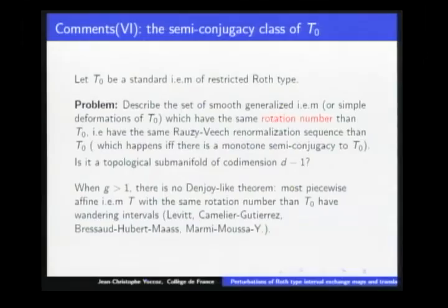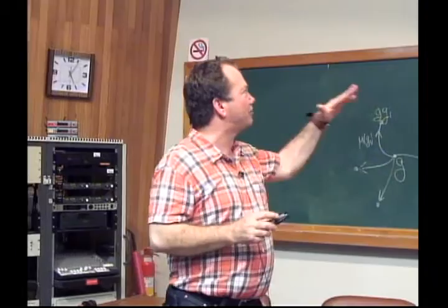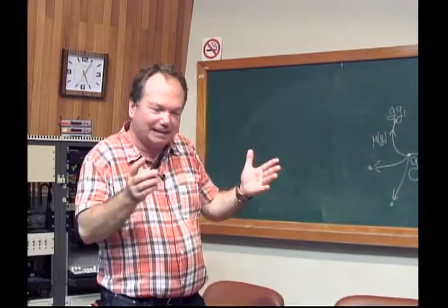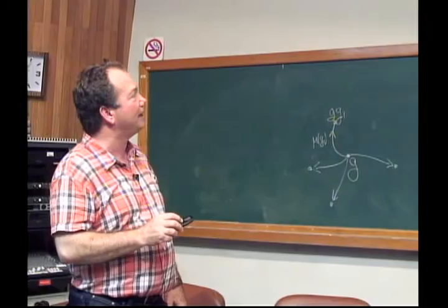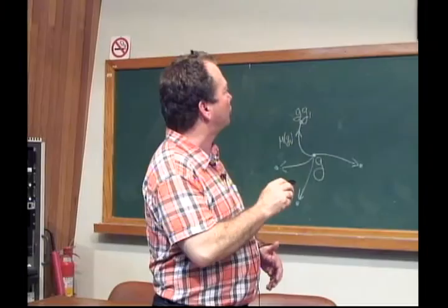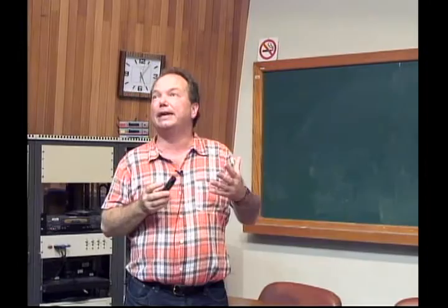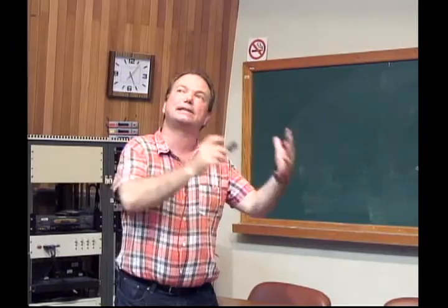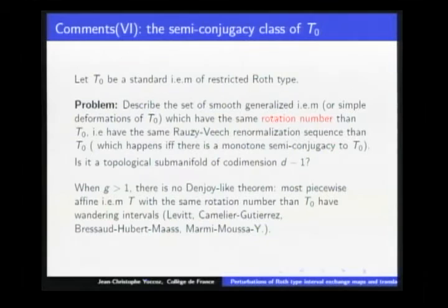In fact, even piecewise affine interval exchange maps — which certainly satisfy Denjoy's theorem on the circle — will in most cases have wandering intervals as soon as the genus is bigger than one. There is a sequence of such examples. The result by Marmi, Moussa, and myself says that for almost all T₀, and for T in this most general case, you expect something of dimension D-1 for the semiconjugacy class, but the C^0 conjugacy class within the semiconjugacy class should have codimension G-1. This is conjecture — definitely not proven.